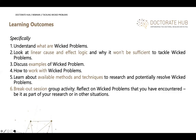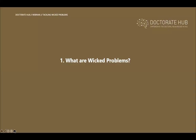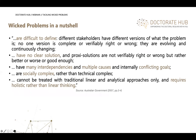What are wicked problems? In a nutshell, they are difficult to define because different stakeholders have different versions of what the problem is, and no one version is complete or verifiable as right or wrong. They are evolving and continuously changing. There are no clear solutions — only proxy solutions might become available, but they are not verifiably right or wrong, only better or worse. There are many interdependencies, multiple causes, and conflicting goals. They are socially complex rather than technically complex.